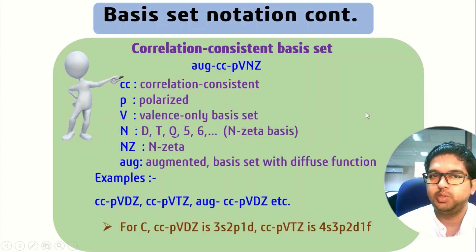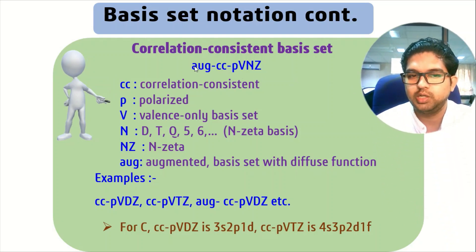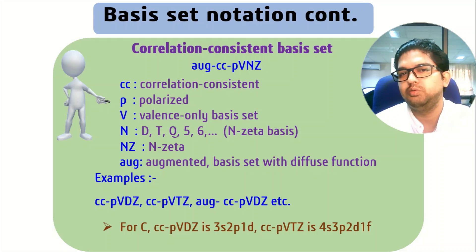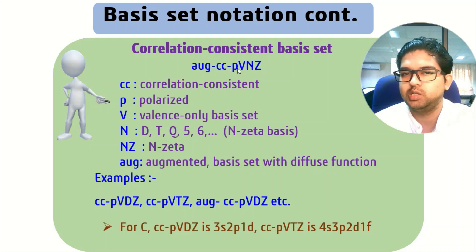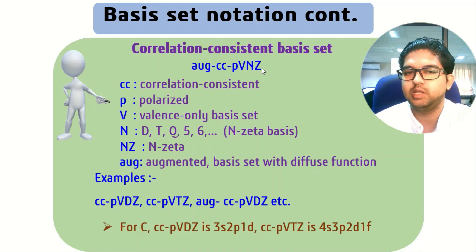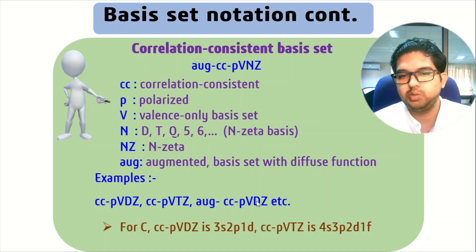Now we will discuss the basis set notation for the correlation consistent basis set. In this case we use AUG, which stands for augmented, used for the diffuse function. In split valence we use plus-plus; here we use augmentation AUG. Then CC stands for correlation consistent, PV stands for polarized valence, and Z is the N-zeta. Examples include CC-PVDZ, CC-PVTZ, and AUG-CC-PVDZ — these are the different types of basis sets in the correlation consistent family.